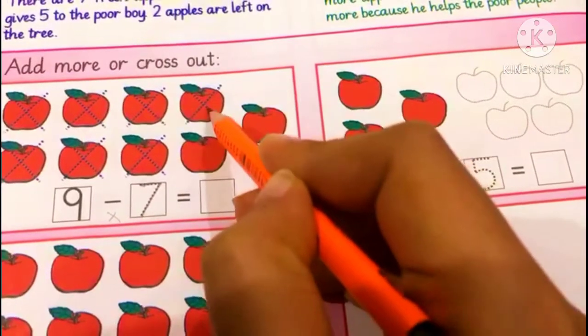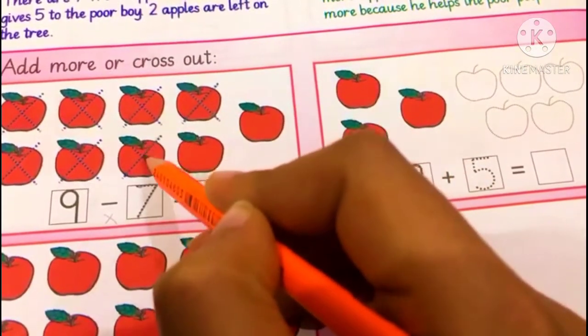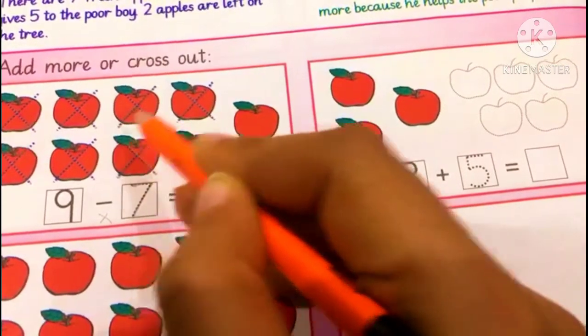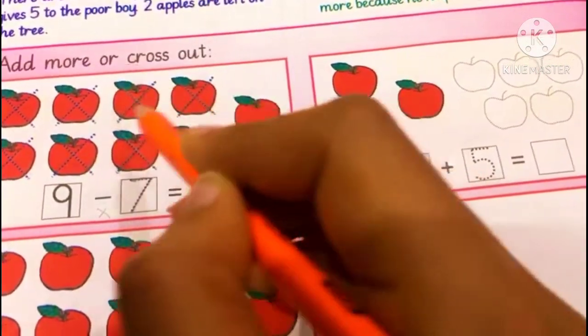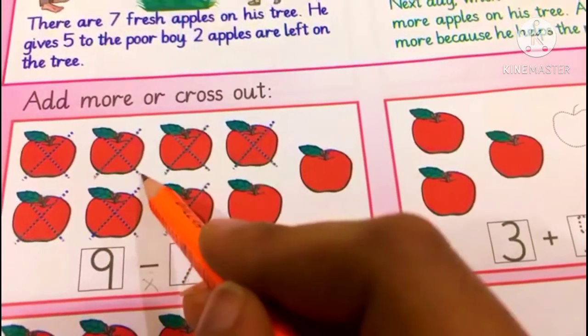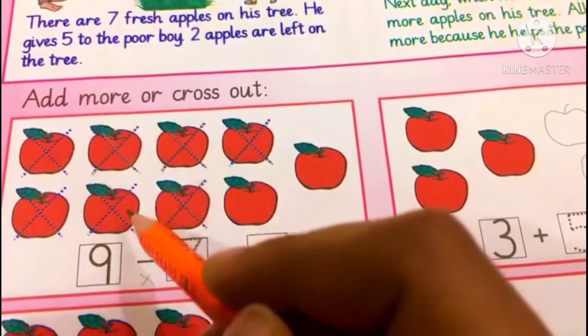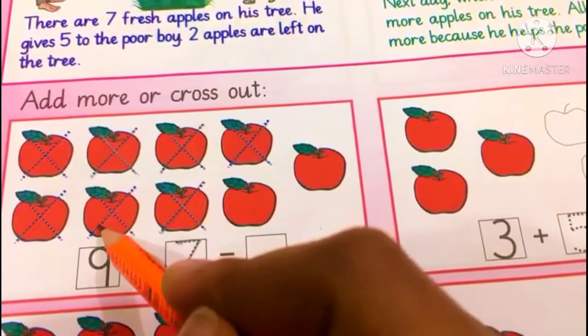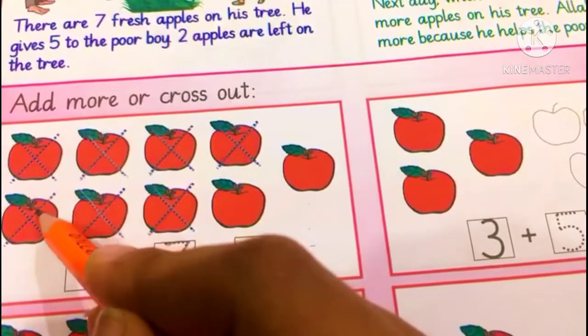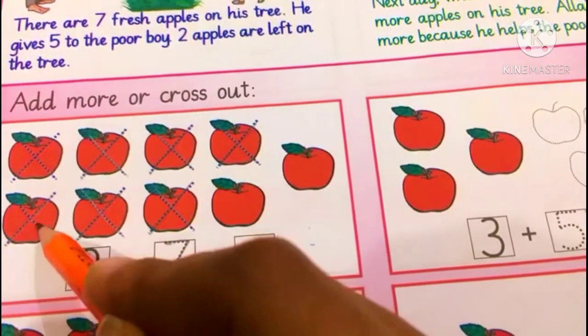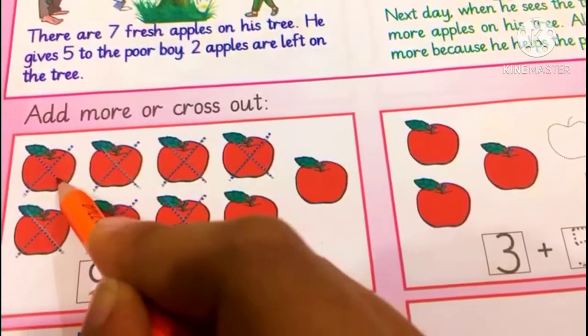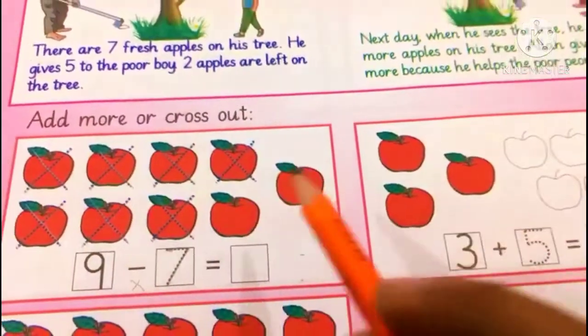1, we have crossed 1 apple. 2, crosses are already marked. You will join the dots and trace the crosses. 3, 4, 4 apples we have crossed. 5, we will cross 7 apples. 6, make a cross on 7th apple. Yes, we have crossed 7 apples.